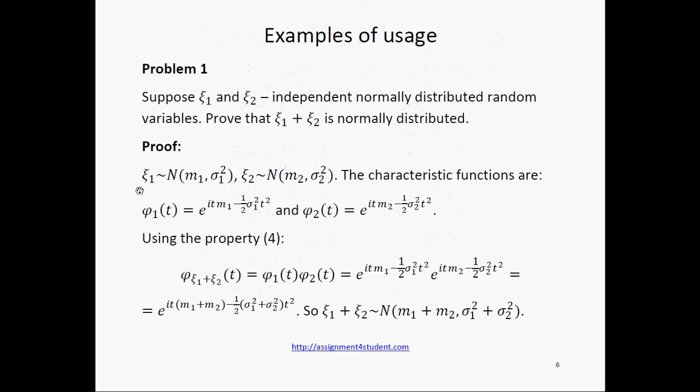Let xi1 be a normally distributed random variable with parameters m1 and sigma1 squared, and xi2 with parameters m2 and sigma2 squared. Then the characteristic functions are the following: phi1 and phi2.